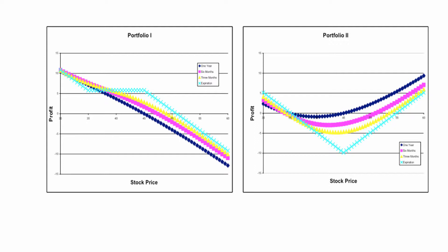For Portfolio 1, you can see a declining line for low prices — that's short put — then flat, then declining again for rising prices, which is short call. For Portfolio 2, the payoff line is V-shaped, which tells you that you are long put and long call, with the same exercise price for both.